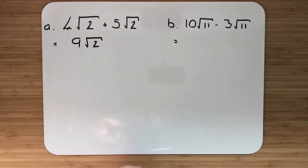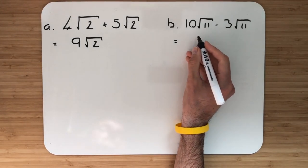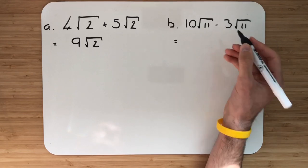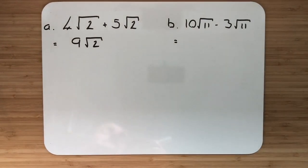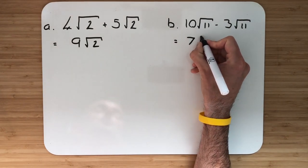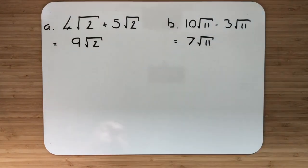In example B, we have 10√11. I subtract 3√11 away from you. So you've got 10, I take away 3, you're left with 7√11.